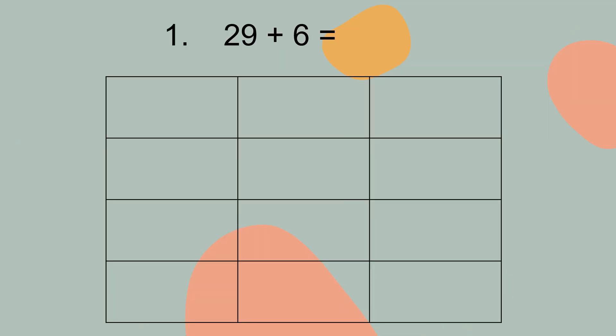For question number 1, 29 plus 6 equal to what? First step you need to do in column form. You write down 29 plus 6 equal to, please use ruler. Now you still remember 9 is ones and 2 is tens. So now you look at ones first.